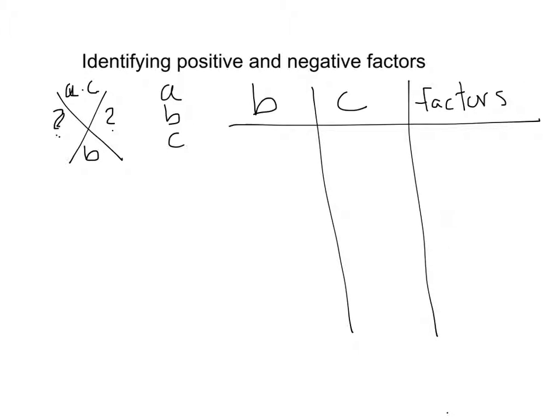For example, if b and c are both positive, then both of your factors will be positive. If b and c are negative and positive, that is, you have a negative b value but a positive c value, then both of your factors are negative.